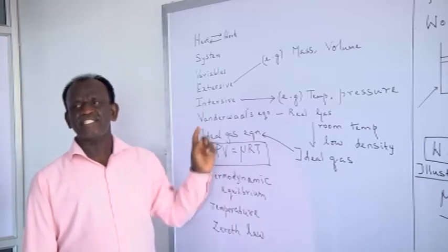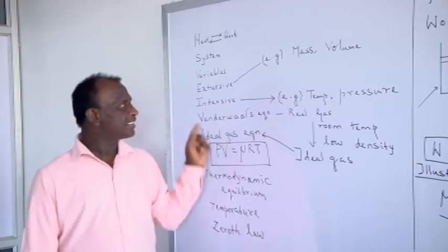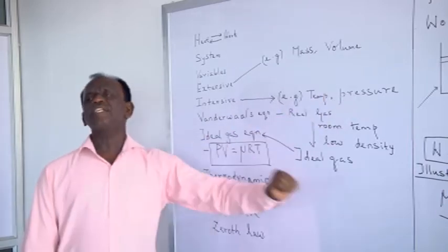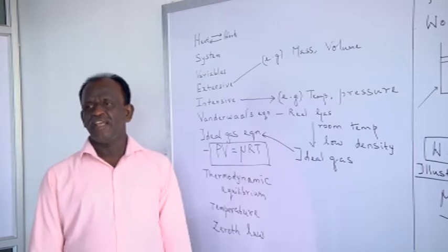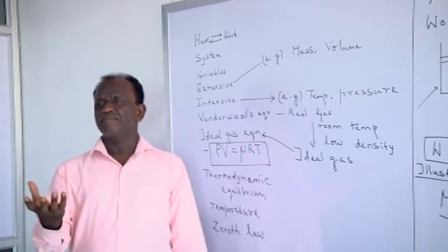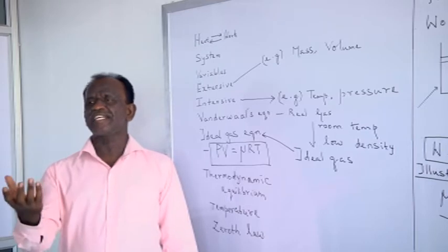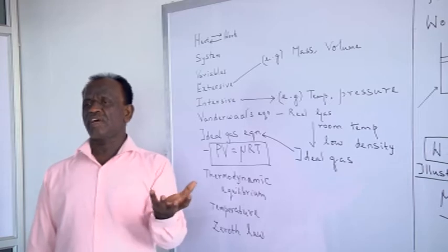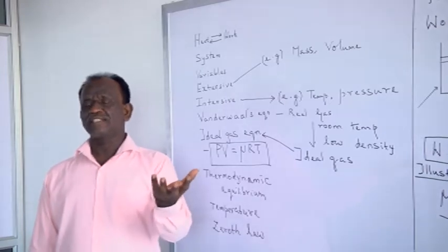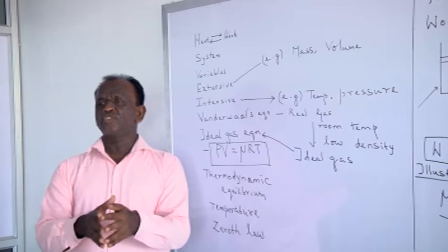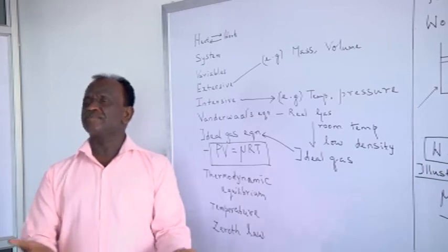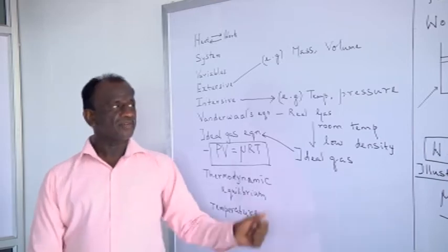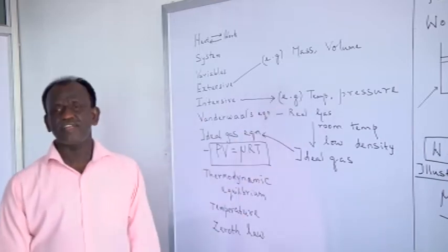Those variables that do not satisfy the above algebraic addition are called intensive variables. For example, temperature and pressure do not satisfy algebraic addition. For example, I have a beaker possessing some amount of hot water at 30 degrees Celsius, and in my left hand there is an equal amount of water at 20 degrees Celsius. Let me combine them into a resulting system — the resulting system does not have 50 degrees Celsius. Therefore, temperature is what is called an intensive variable.